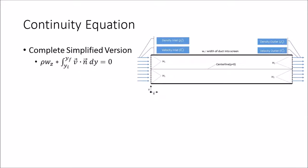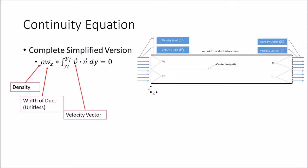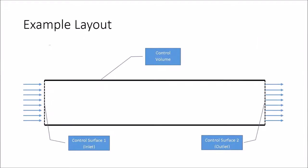Going over the simplified continuity equation, we have the density of the fluid, the width of the duct which equals 1 as a unitless quantity, the velocity vector, and the normal vector of the control surface. This is an example of a control volume. On the left you see the inlet, which is a control surface, and on the right the outlet, another control surface. The two solid lines are called walls, which are surfaces in a control volume that do not allow flow through them.